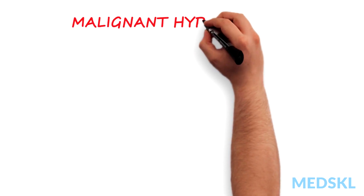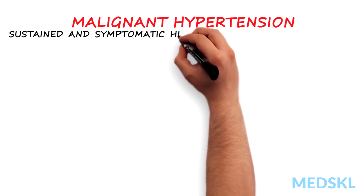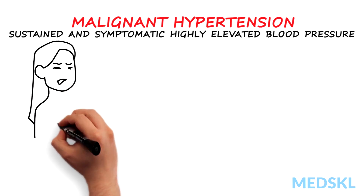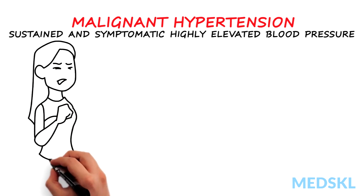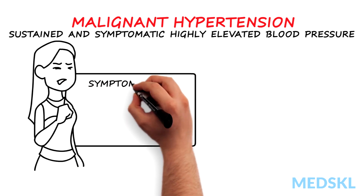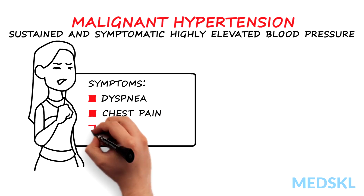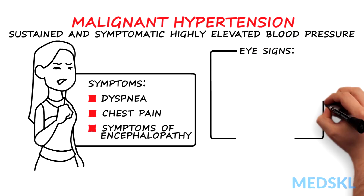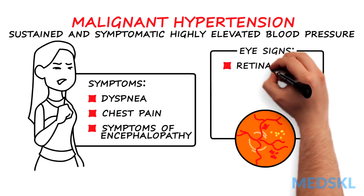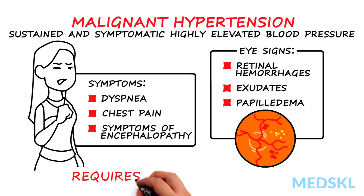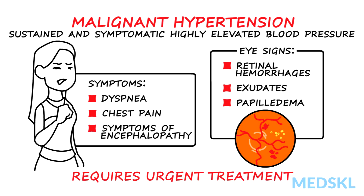Malignant hypertension is the presence of a sustained and symptomatic highly elevated blood pressure. The blood pressures associated with symptoms of malignant hypertension can be highly variable and can sometimes be only minimally elevated. These symptoms can include dyspnea, chest pain, and those consistent with encephalopathy. Eye signs associated with malignant hypertension include retinal hemorrhages, exudates, and papilledema. Malignant hypertension requires urgent treatment before it leads to irreversible end-organ damage.